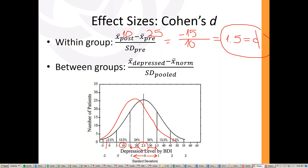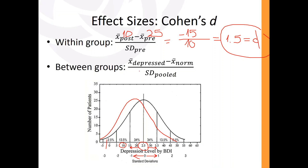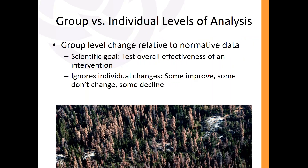That's the within-groups version. For the between-groups version, the denominator is a little bit more complicated, but the formula is very similar — just a different adjustment to account for the fact that there are two groups instead of just one. That was group analysis — where statistical significance and effect sizes come into play. But there's a risk that we're not seeing the individuals; we might be losing the trees for the forest. We also don't want to miss the trees for the forest. In a group level analysis, you're looking at overall change, and that's the scientific goal — is there overall effectiveness of an intervention — but it ignores individual changes.